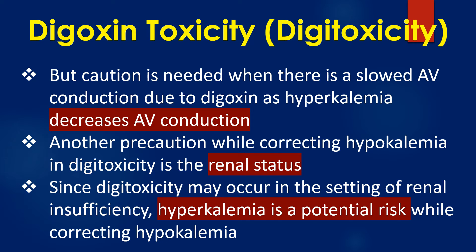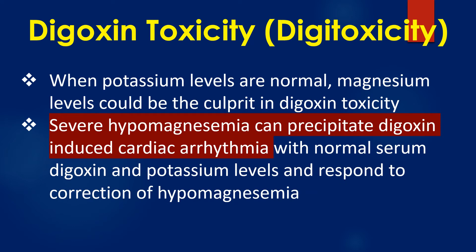Another precaution while correcting hypokalemia in digoxin toxicity is the renal status. Since digoxin toxicity may occur in the setting of renal insufficiency, hyperkalemia is a potential risk while correcting hypokalemia. When potassium levels are normal, magnesium levels could be the culprit in digoxin toxicity.